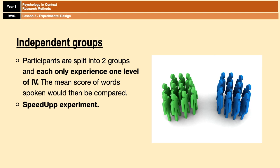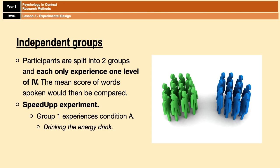The results of the two groups are then compared. So in our experiment, group one would experience condition A — the Speed Up condition — and group two would experience the control condition, the drinking water condition. Afterwards, the mean number of words spoken in the following five minutes would be recorded and compared between the two groups.